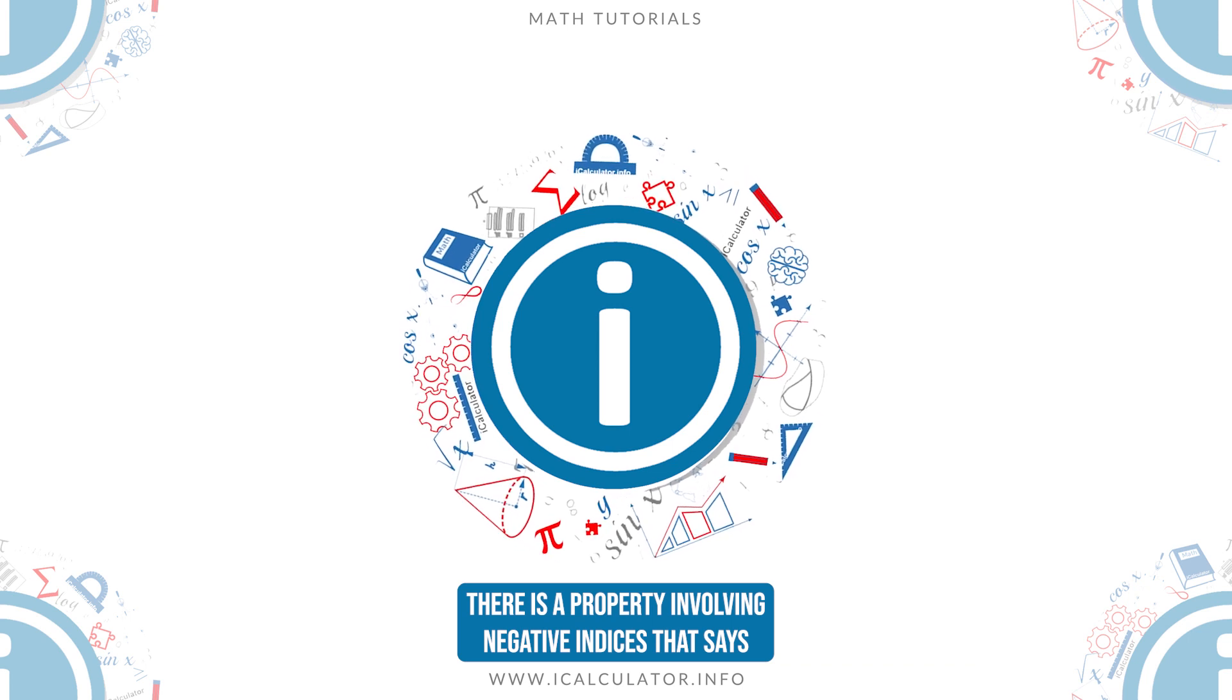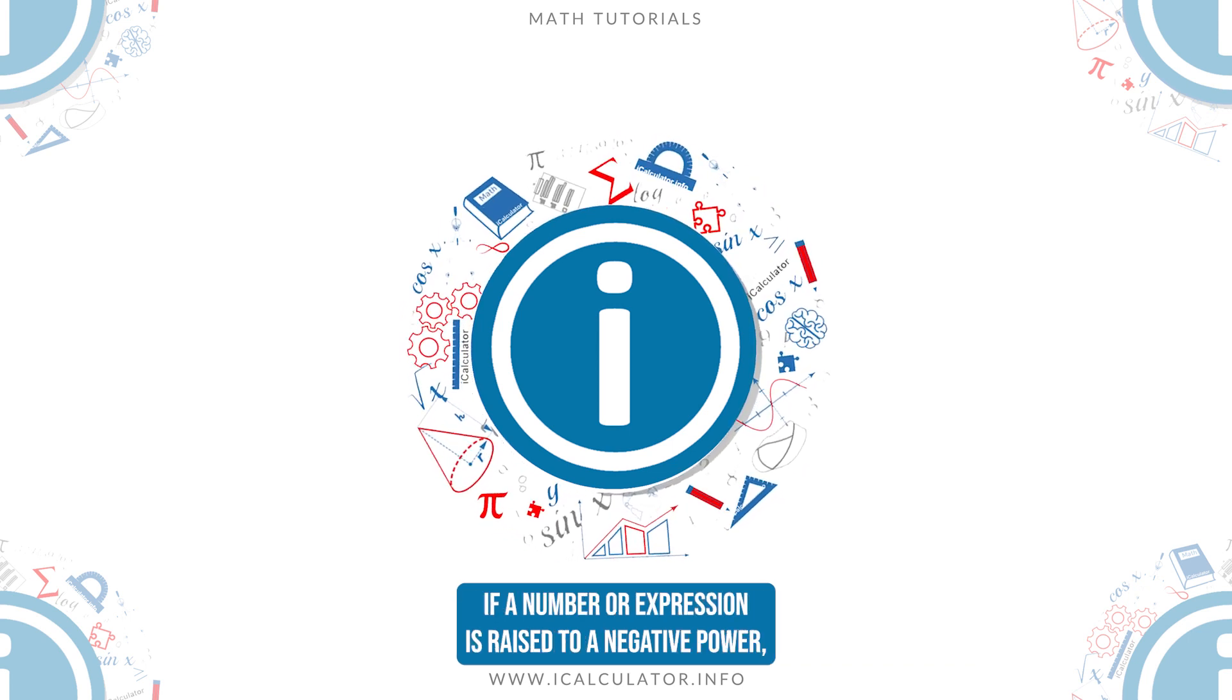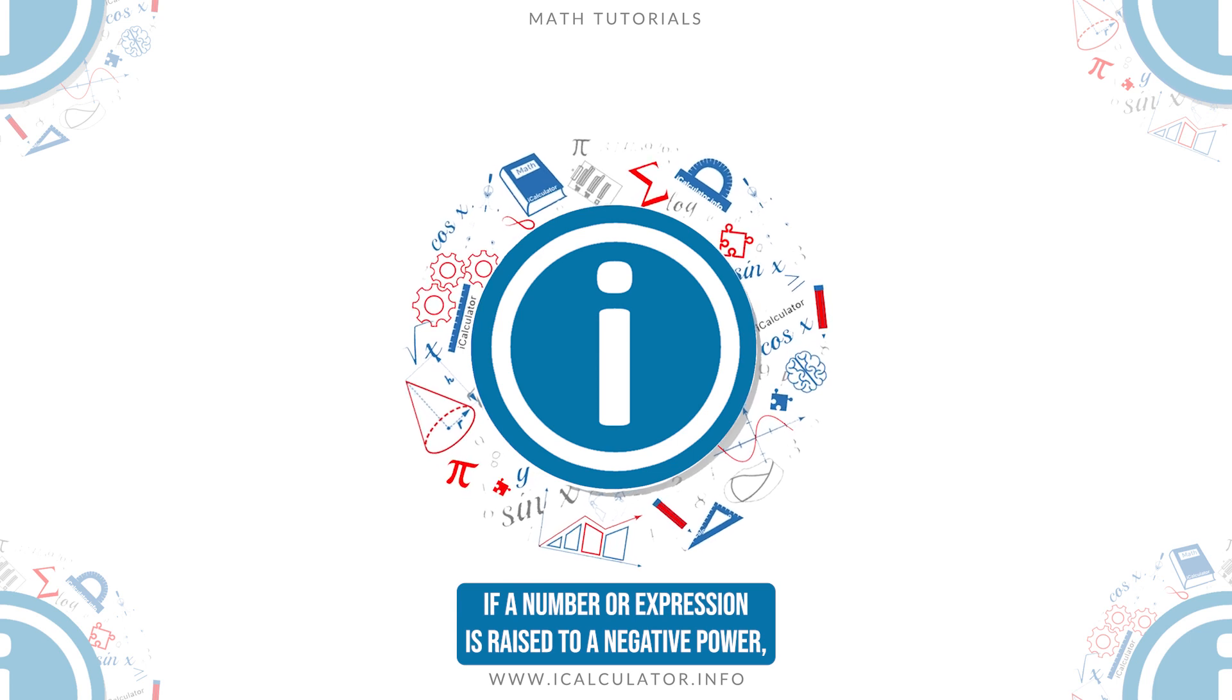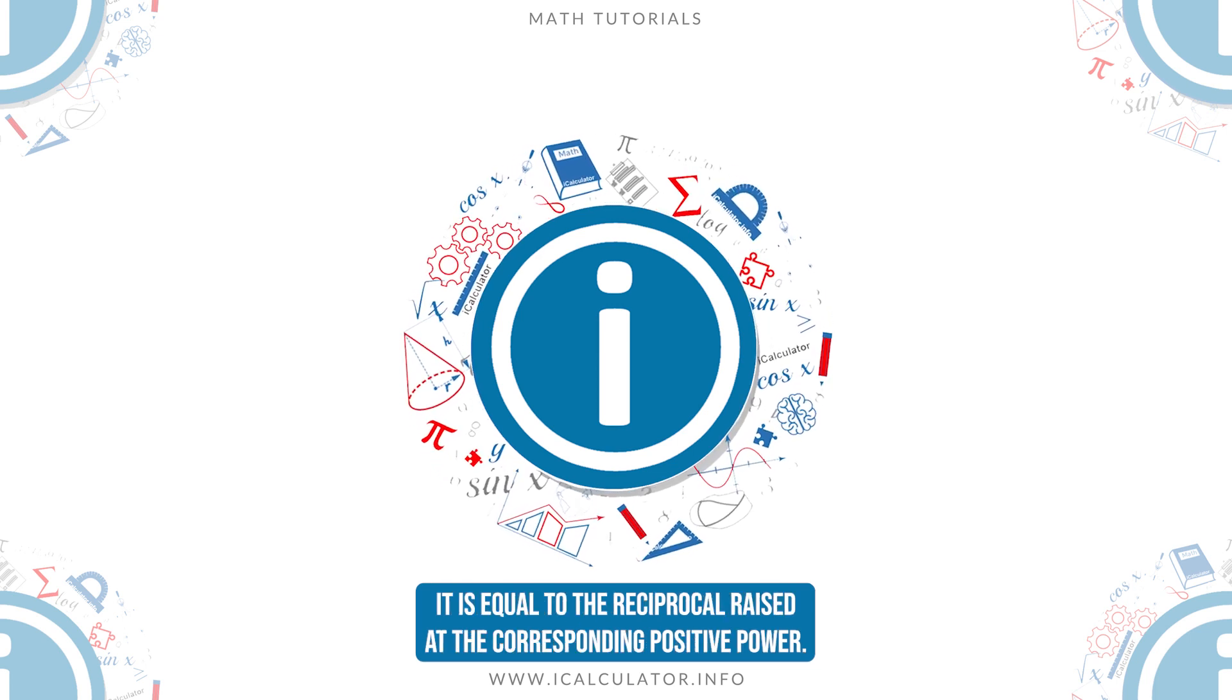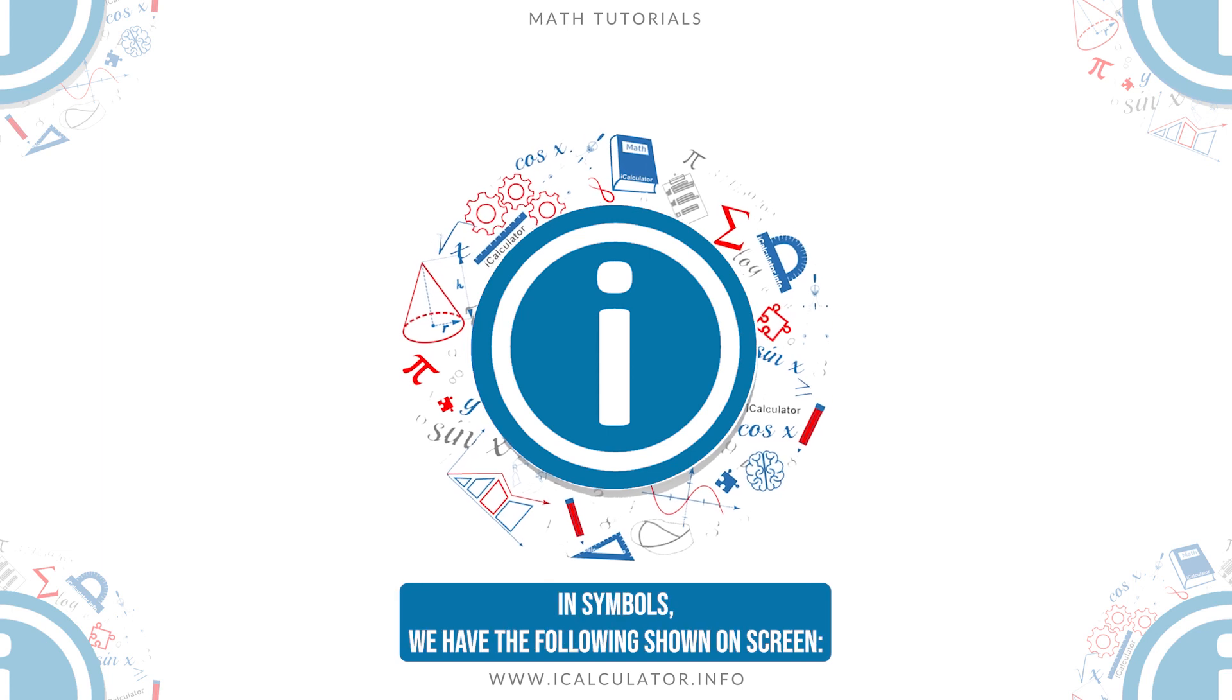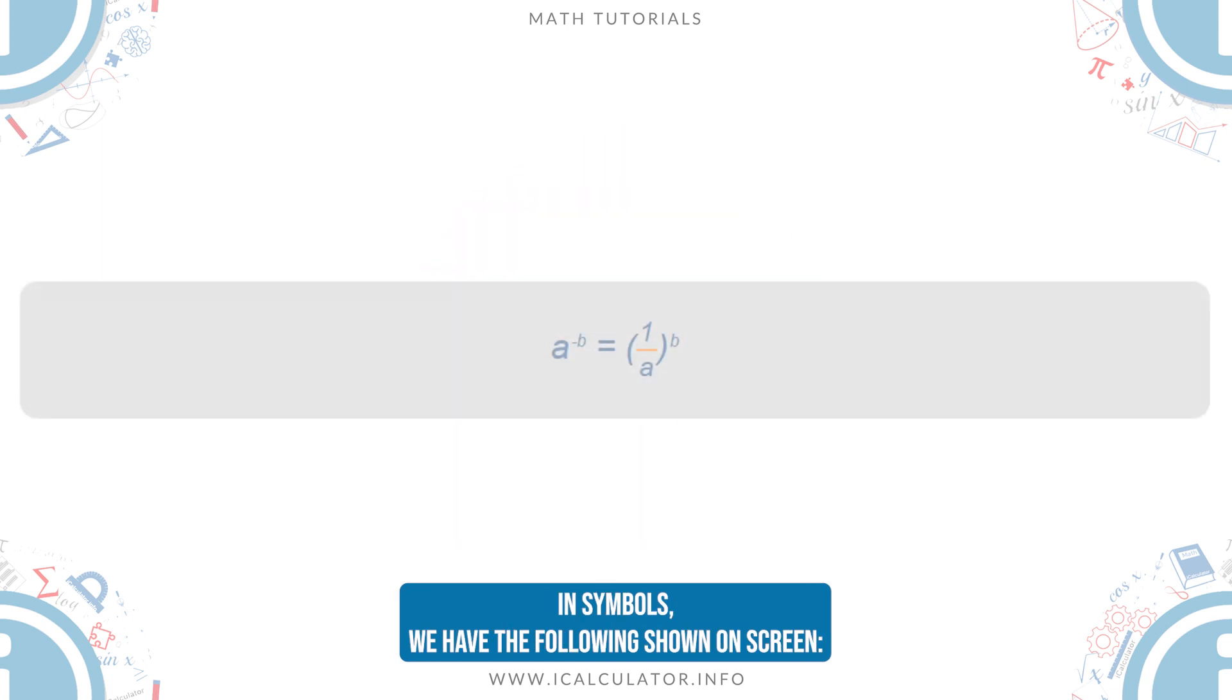There is a property involving negative indices that says, if a number or expression is raised to a negative power, it is equal to the reciprocal raised at the corresponding positive power. In symbols, we have the following shown on screen.